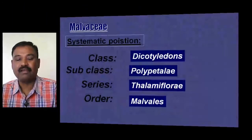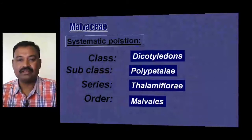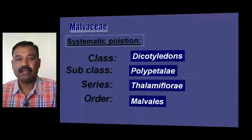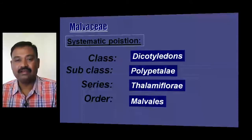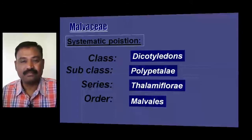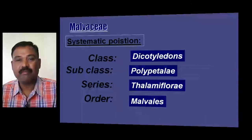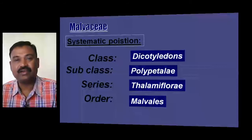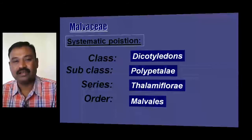The systematic position of Malvaceae. Malvaceae belongs to class Dicotyledoneae, subclass Polypetalae, and series Thalamiflorae, and order Malvales. It is Bentham and Hooker's classification. Malvaceae is placed in Dicotyledoneae because it consists of a taproot system, reticulate venation, pentamerous flowers, and two cotyledons — all members of the family share these features.